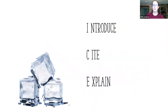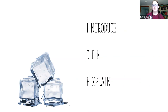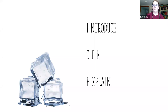As we go to include any research in your paper, you want to use what we call the ICE method: you introduce whatever it is you're about to include — whether it's a quote, a summary, or a paraphrase — introduce where you found that information, cite it, and then follow up with an explanation of how it ties into your paper and the points you're making.